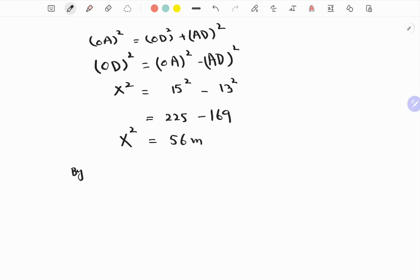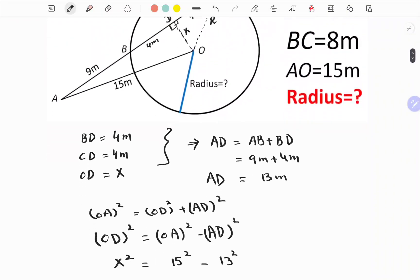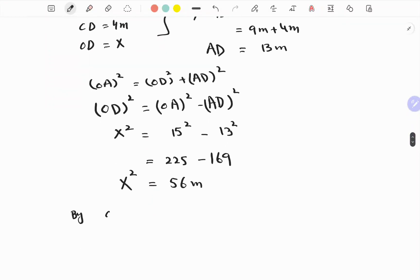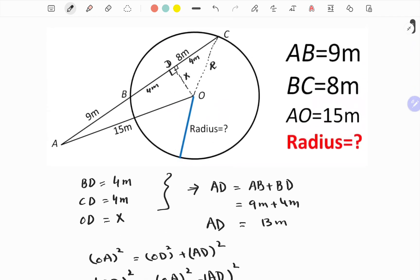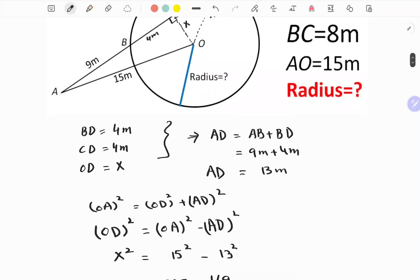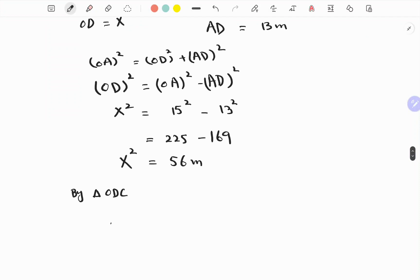So by right triangle ODC, we have OC squared. ODC squared is equal to OD squared plus DC squared.